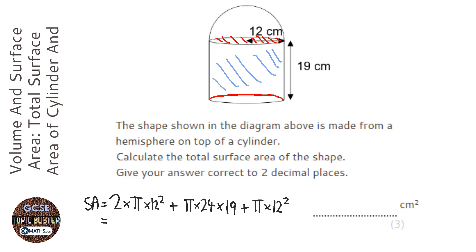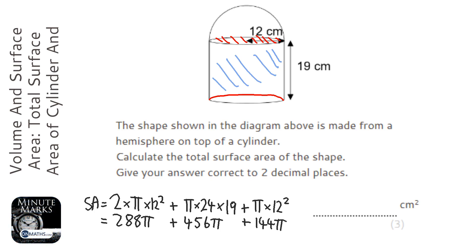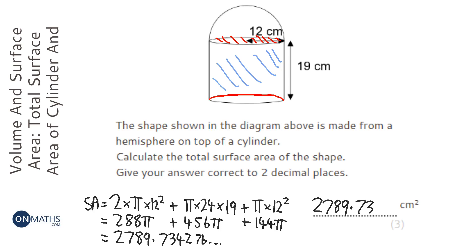I'm going to follow my own advice and write each part in terms of π to keep accuracy. That gives 288π, plus 456π, plus 144π. Adding those: 288 + 456 + 144 = 888, times π. Converting to a decimal to two decimal places gives 2789.73 cm².